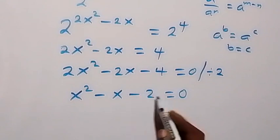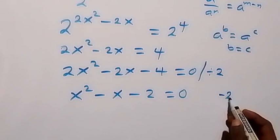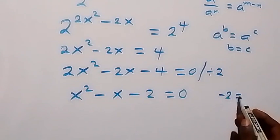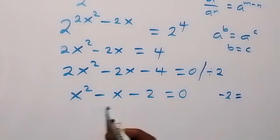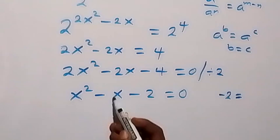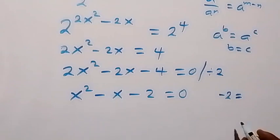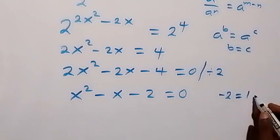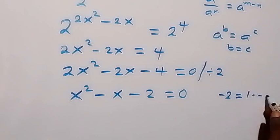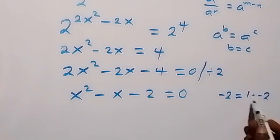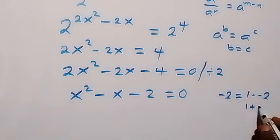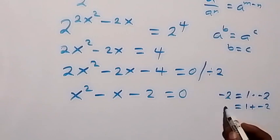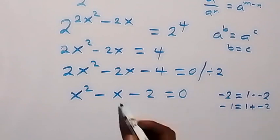We need two factors of negative 2 that sum to negative 1. That gives us 1 and negative 2, since 1 times negative 2 is negative 2, and 1 plus negative 2 equals negative 1.